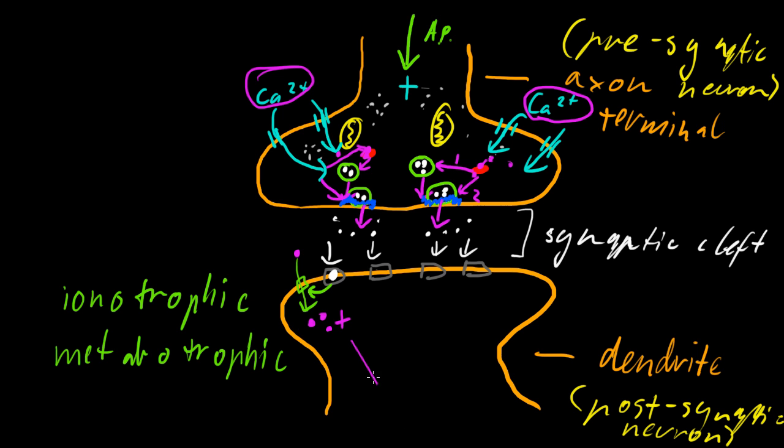And then that's a graded potential which gets sent and can then cause activation of the postsynaptic neuron and cause it to create action potentials. And then this whole process repeats.